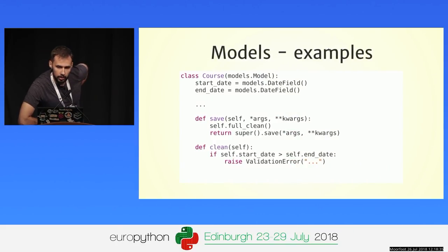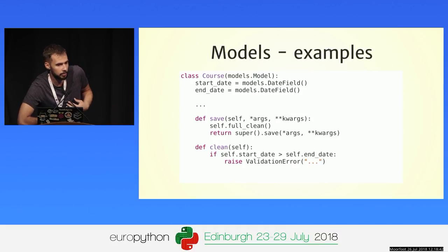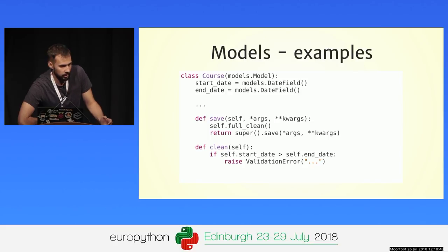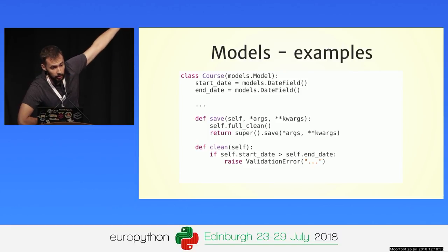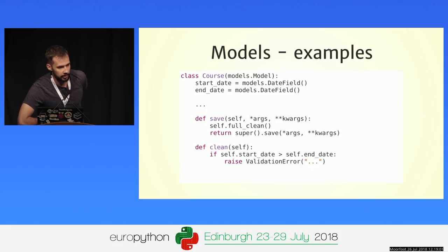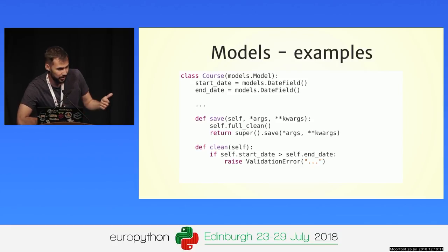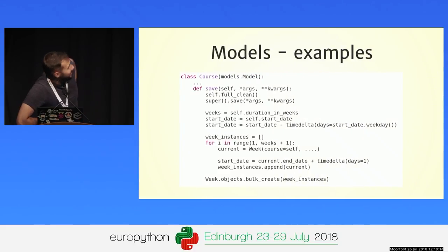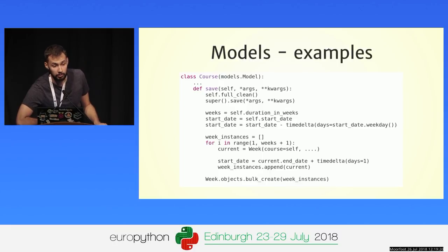Another thing that models allow us to do is define custom validation, because sometimes validation needs to be expressed as Python code and not just as a database constraint. This custom validation is usually written in the clean method. What we usually do is redefine save, call full_clean — not forgetting to call it — and raise validation errors if something's wrong. This is also a good place to put business logic like additional validations. Models keep those two things together: properties and additional validation. But adding heavy logic to save is not the right way to do it.